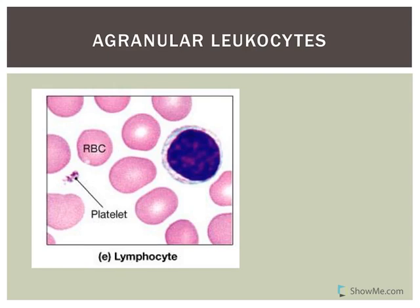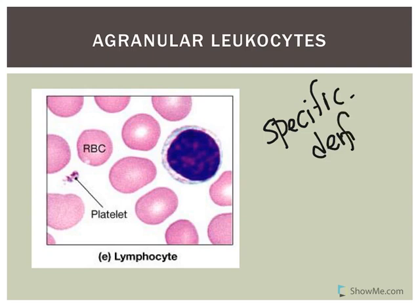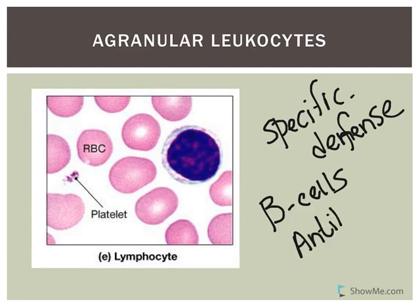The last cells are the lymphocytes. There are multiple types — T lymphocytes and B lymphocytes — though on a blood smear you can't distinguish a B cell from a T cell. Lymphocytes in general are part of your specific defenses or immunity. These are the longest-living of all white blood cells — some have lived for years. B cells produce antibodies, while T cells are very important components of the immune system.